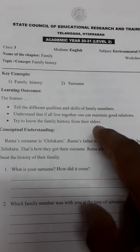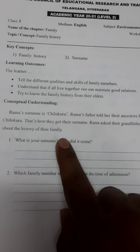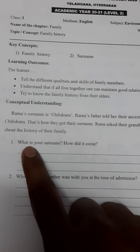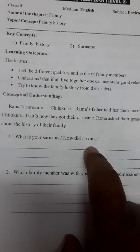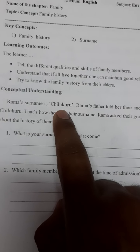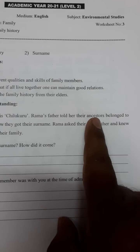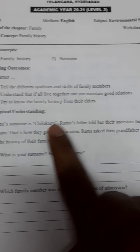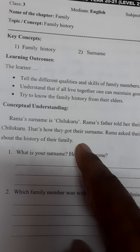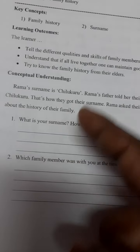We have learnt in the previous video what is a surname and how it comes. Here you have two questions to answer: What is your surname? How did it come? Rama's surname was Chilkuru, and it came because her ancestors belonged to a village called Chilkuru. That's why their family got the surname Chilkuru. How did your family get your surname?